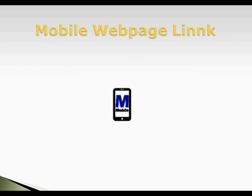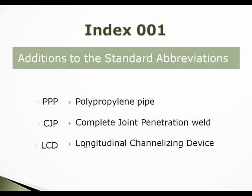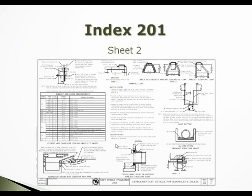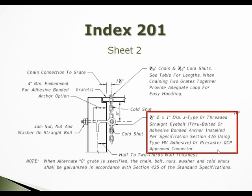I'm also going over our design indexes that have changed. Here is our first one, index 001 — we have added three abbreviations. Moving on to index 201, sheet 2: if you look at the top left corner, a note has been added to the leader note regarding the eye bolt and chain. At the end, the ore precaster QCP approved connector was added to the note.